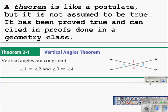A theorem is similar to a postulate because it is something that we know is true, but it is different from a postulate because a theorem cannot be assumed true. A theorem needs to be proved true, then it can be used or cited in proofs done in any geometry class.